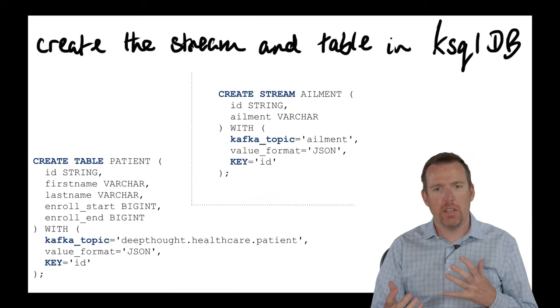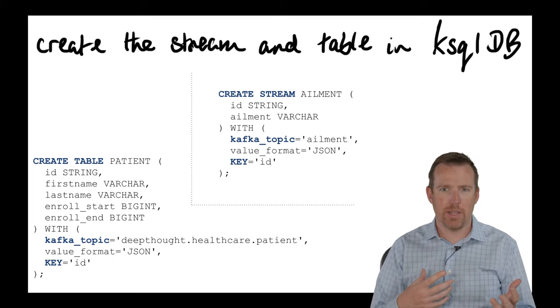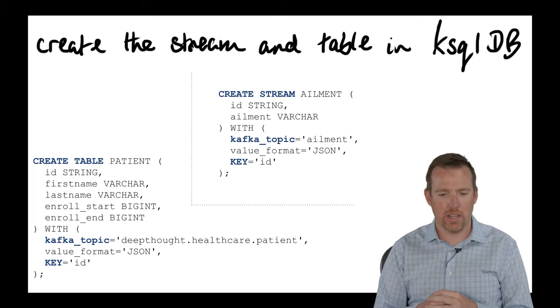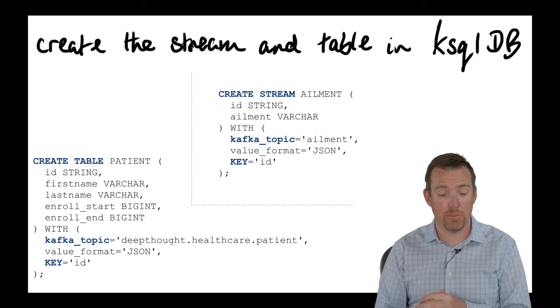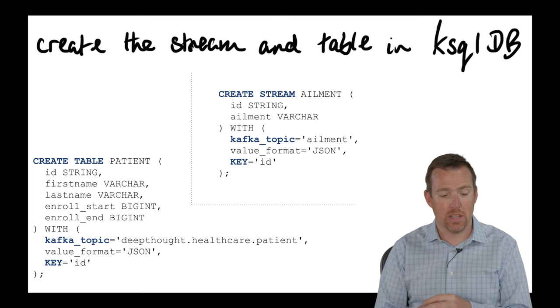So ksqlDB, you can build tables and streams based on topics, and this is how you do it. So there's the patient table there. You can see that Kafka topic. So we're just telling it what the key is and the format of the messages.